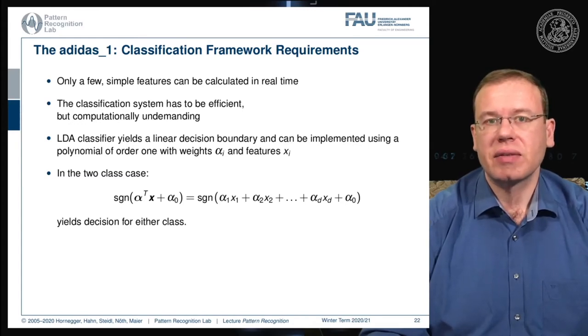The nice thing with the LDA classifier is that it essentially maps this two-class problem into a linear decision boundary. We can approximate this two-class problem with a polynomial of order one. We simply have to introduce weights alpha_i and features x_i. The actual decision is performed as the sign of the projection onto this class boundary with the respective bias.